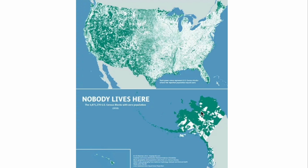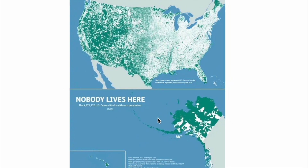In Hawaii, the unpopulated green areas are mostly in the middle of the islands, since most of the population lives on the coastlines. Alaska has a huge amount of green — especially the northern and northwestern regions — with very few white population dots. In the continental U.S., the Rocky Mountain area has a lot of this 'nobody lives here' green.